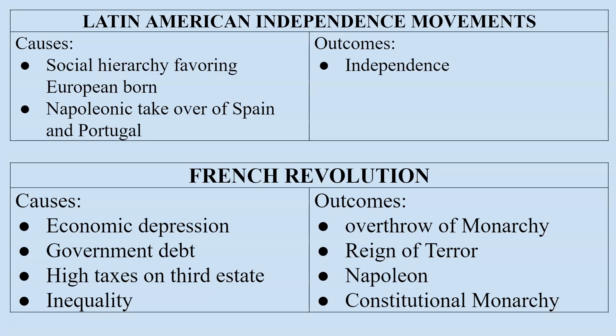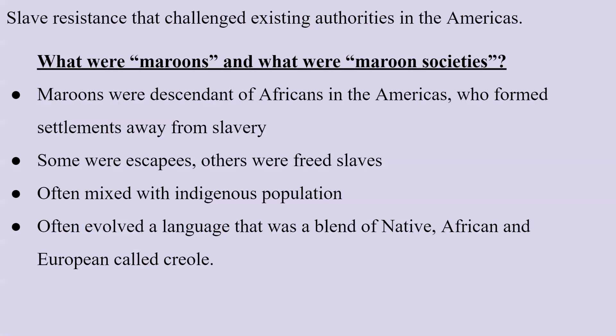Independence spread all over Latin America and Brazil. The French Revolution was the most violent of all these revolutions. It grew out of an economic depression caused by government debt, high taxes on the Third Estate — the middle and lower classes — and a huge climate of inequality. This led to the overthrow of the monarchy, the Reign of Terror, the execution of the king, the rise of Napoleon and the Napoleonic Wars, and eventually, after Napoleon's defeat, the setup of a constitutional monarchy in France.